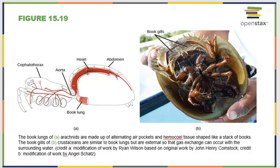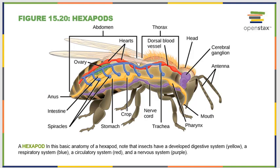The most common arthropods we're probably familiar with are the hexapods — your typical bugs. A bee, for example, has a head region, a thorax, and an abdomen. You can note the nerve cord running the whole length of the body, and a dense cerebral ganglion. Note the easy segmentation and the six legs — three pairs — which is where the name comes from: hex means six, so hexapod means six legs. These are typical insects with a well-developed digestive system.